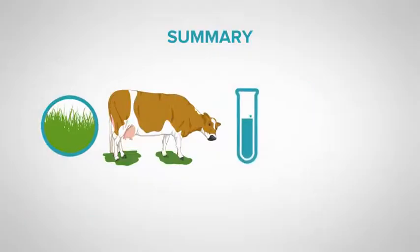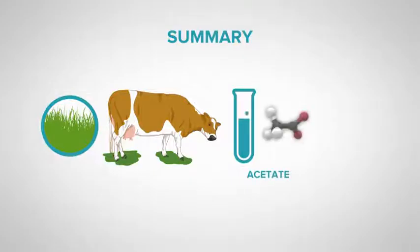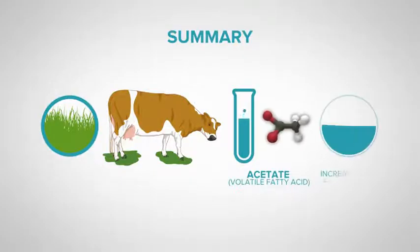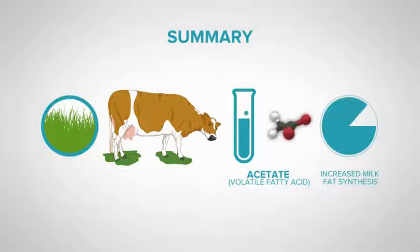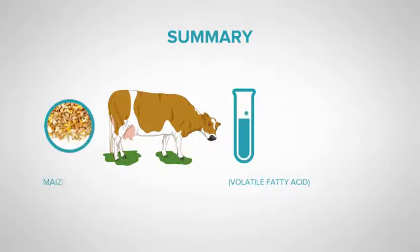If the cow was to eat feeds that are high in structural carbohydrates, such as pasture or soya hulls, then acetate is the primary volatile fatty acid that is produced, and this results in increased milk fat synthesis.